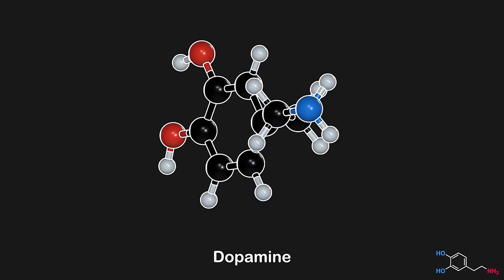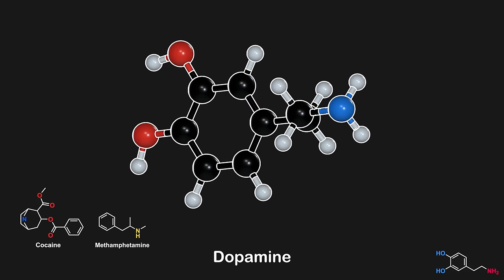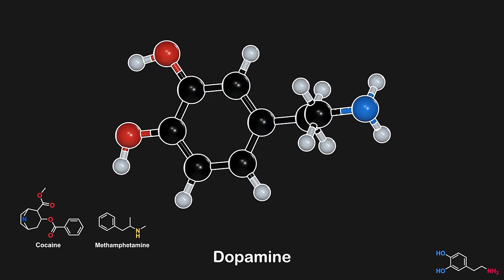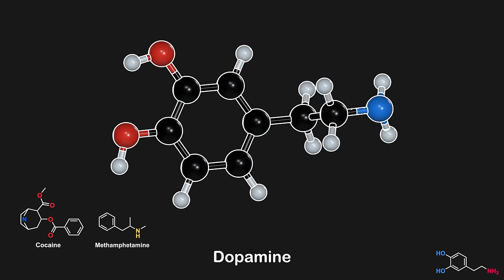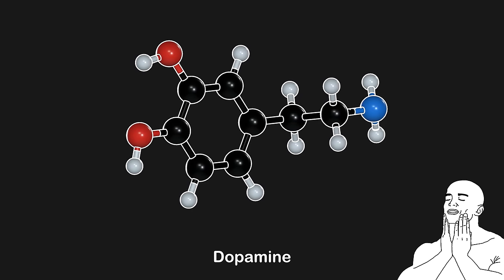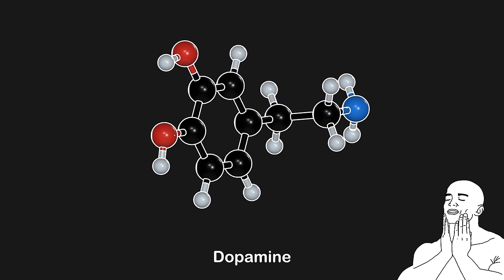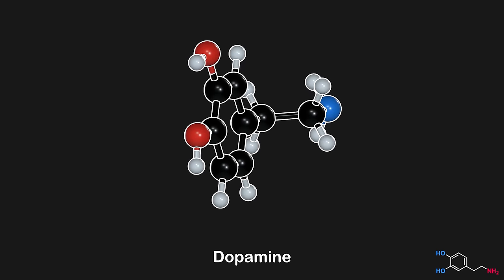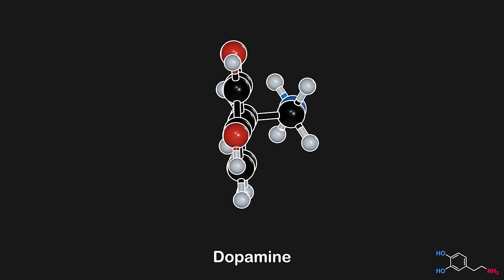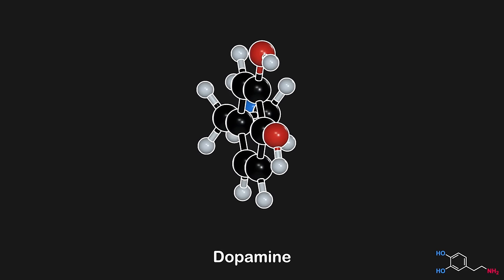Furthermore, dopamine is central to addiction. Substances like cocaine and methamphetamine increase dopamine release or block its reuptake, leading to a dopamine surge in the brain's reward circuits. This can cause intense pleasure, but over time, the brain adjusts to these elevated dopamine levels, often causing tolerance, by reducing its own dopamine production or by reducing the number of dopamine receptors, potentially leading to dependence.